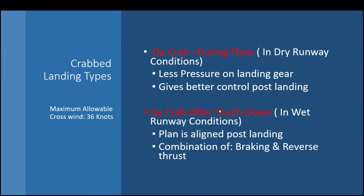The maximum allowable crosswind for landing under the 737 is about 36 knots, which is a lot even to try in simulation. I would recommend starting from about 15 knots when beginning your practice.